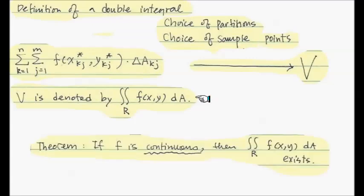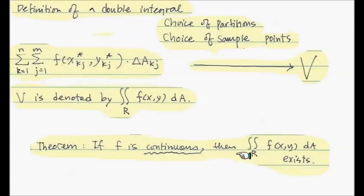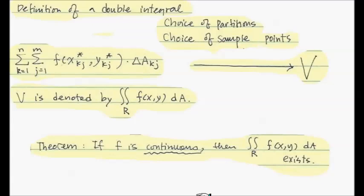That value v is denoted by the double integral symbol with R subscript and dA, which imitates delta A_kj — but again, this is just notation. There is a theorem: just like the one-variable Riemann sum theorem, if the function is continuous as a two-variable function, then this double integral exists. Continuous over the rectangular region — the double integral exists. That's the theorem.